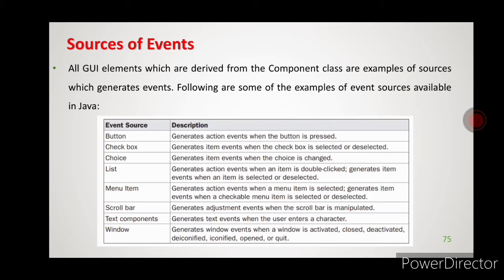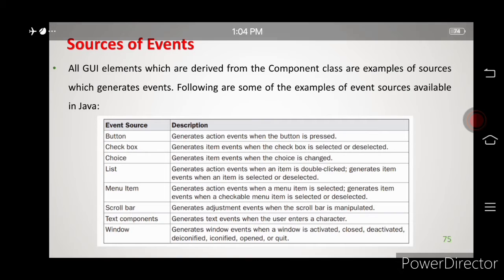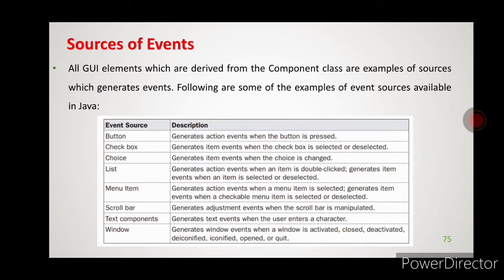Next is list — it generates action events when an item is double-clicked, or it can also generate item events when an item is selected or deselected. For example, when purchasing groceries it will show a list of items. You can double-click on those items — which generates an action event — or select/deselect them, which generates an item event.